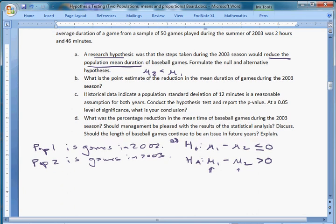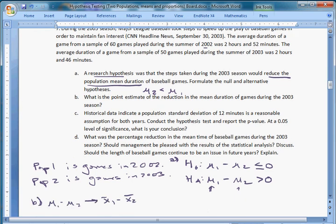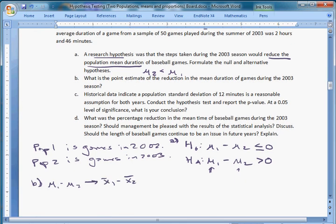Question 2, part B: What is the point estimate of the reduction in the mean duration of games during the 2003 season? The point estimate, if you recall from the last video, is our best guess of μ₁ minus μ₂. Our best guess of that is going to be X̄₁ minus X̄₂. X̄₁ was the sample from 2002, it was 2 hours and 52 minutes, which is 120 plus 52, so 172 minutes.